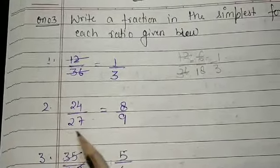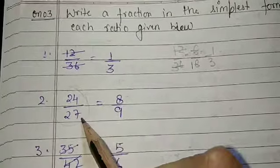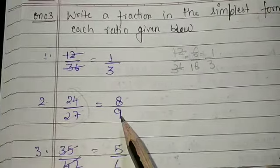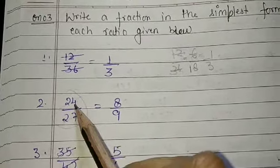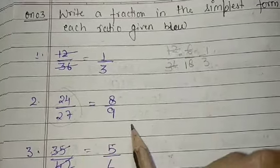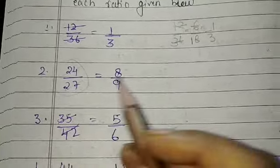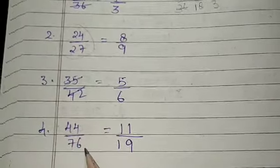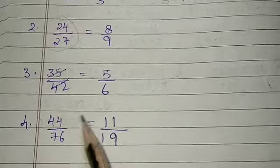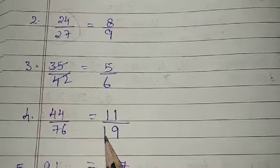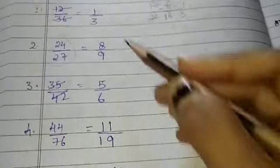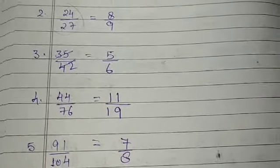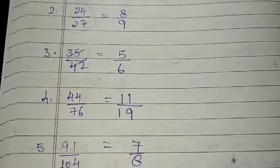Again you can write the same but you will see twenty four and twenty seven in which table they come. So three eight is twenty four and three nine is twenty seven. Both should come in one table, then you can cancel out. Thirty five and forty two. Seven five is thirty five and seven six is forty two. Now this one forty four over seventy six. Four nine is four, four nine is four, four nine is four or four nine is thirty six. Now ninety one and one eight four. If you know the table of thirteen, thirteen seven is ninety one and thirteen eight is 104. So this is the simplest form. It means we cannot cancel further.